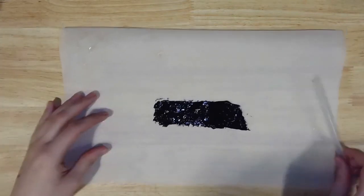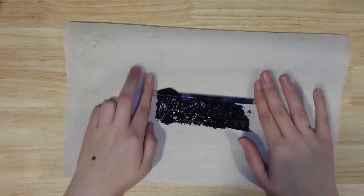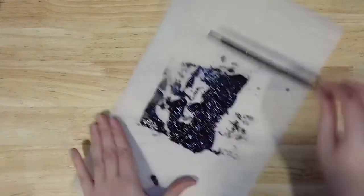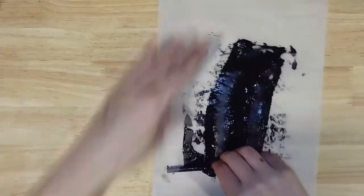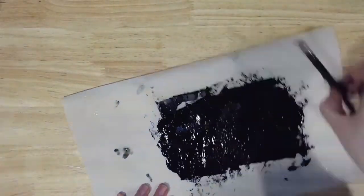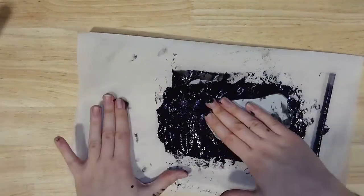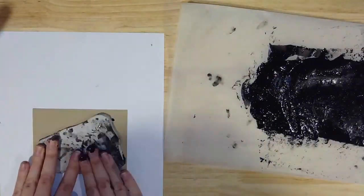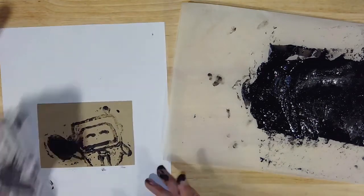Whatever tools you choose, put about a tablespoon of printing ink on your scrap or waxed paper and use your hot glue stick to spread the ink out evenly until it covers a bit more space than your carved block. Lay your carved block face down in the ink and press down on the back to make sure the ink is evenly applied. Then use the block just like you would a rubber stamp.